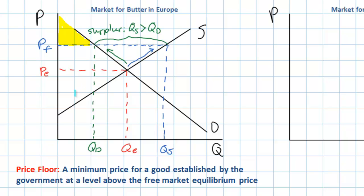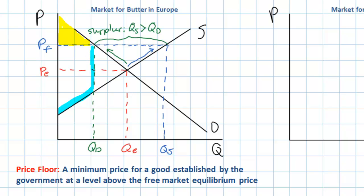Next, let's talk about producer surplus. Before the price floor, at a price of PE, the producer surplus would have been represented by the blue triangle — everything below the equilibrium price and above the supply curve. It may seem that a higher price for butter would lead to an increase in producer surplus, since producers are now selling at a higher price. However, it's not necessarily clear that producer surplus will increase as much as intuition suggests, because the quantity actually sold will only be QD. Therefore, our producer surplus area has to stop at QD — it cannot extend all the way out to QS. The producer surplus will be the area below PF and above supply, stopping at the actual quantity demanded. Everything from QS to QD will remain unsold and will eventually spoil, or will have to be bought by the governments of Europe, which requires a subsidy in the butter market.